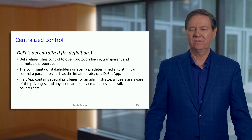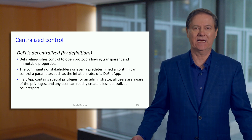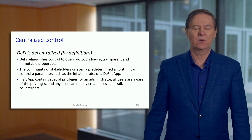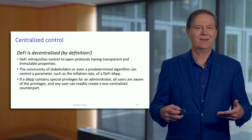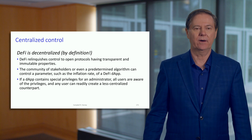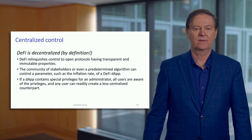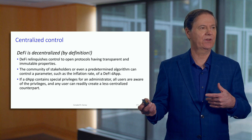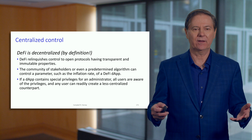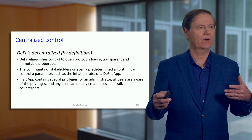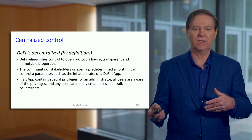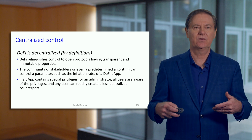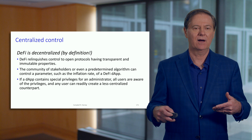Decentralized finance is obviously decentralized — that's the name. The control is not by centralized players but by essentially open protocols that are transparent, that people understand, and that they also understand are immutable. The stakeholders get to interact with these algorithms. There could be a parameter that controls the inflation or deflation, and this is built into the decentralized finance DApp.